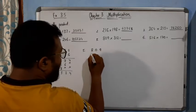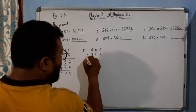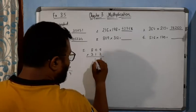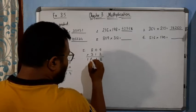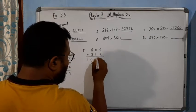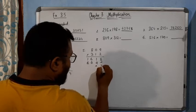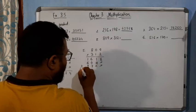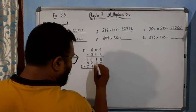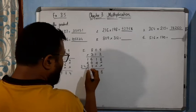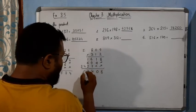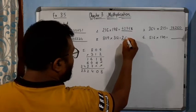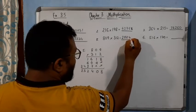Now come to question number 5: 809 multiplied by 312. 2 times 9 is 18, write 8 carry 1. 2 times 0 is 0, plus 1 is 1. 2 times 8 is 16. Cross. Then 1 times 9 is 9, 1 times 0 is 0, 1 times 8 is 8. Double cross. 3 times 9 is 27, write 7 carry 2. 3 times 0 is 0, plus 2 is 2. 3 times 8 is 24. Adding: 8, 0, 4, 2, 5, 2. So the answer is 252408.